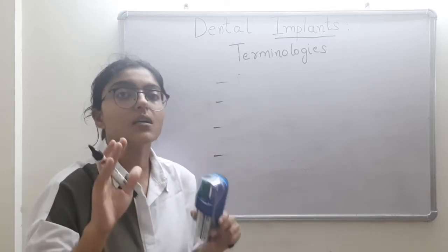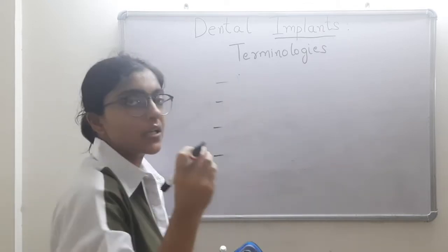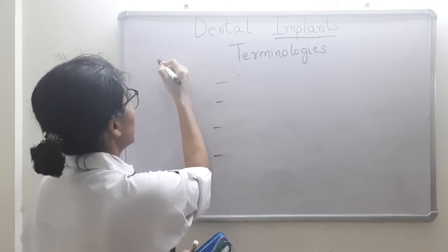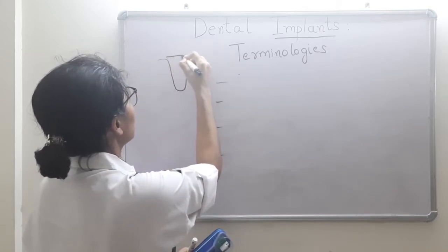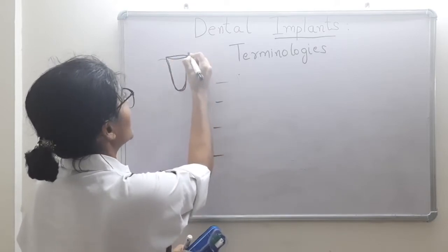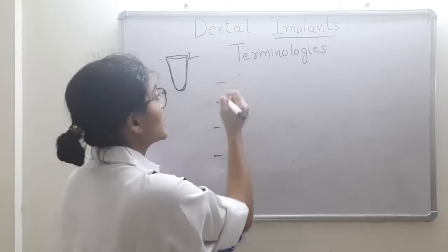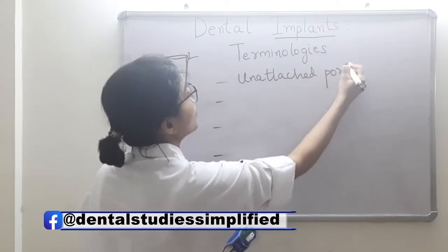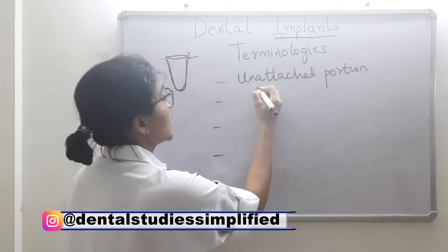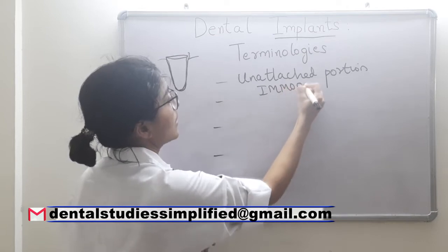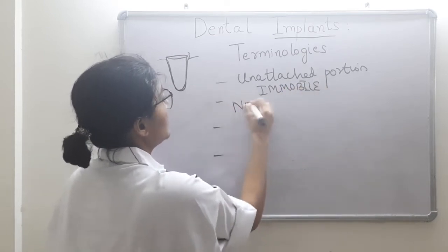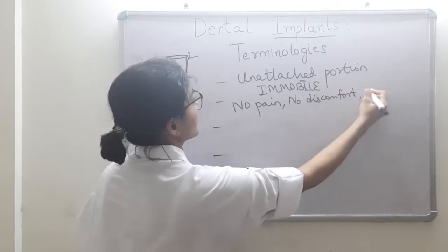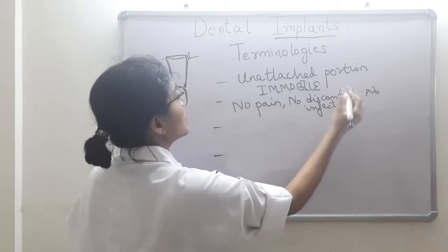In the common placement approach, a portion of the implant's coronal region remains exposed and unattached to bone. The first criterion: this unattached portion should be immobile — it should not be mobile. The second criterion: no pain, no discomfort, and no infection.